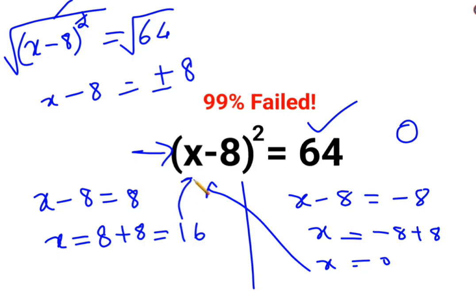Similarly when I put 16 as the value, 16 minus 8 is just 8 whose square is also 64. So I can very easily say that the value of x is either 16 or 0.